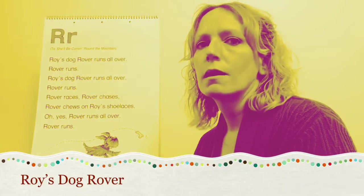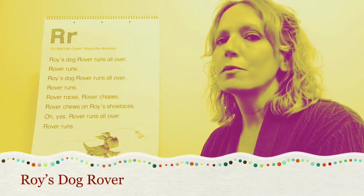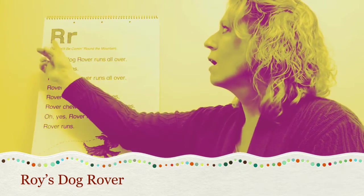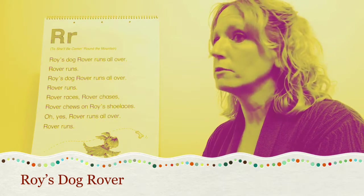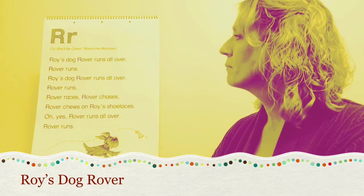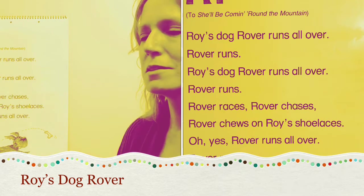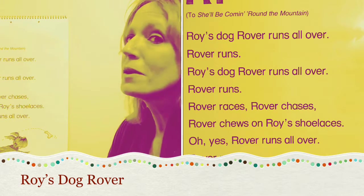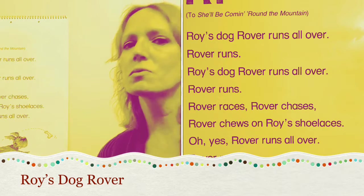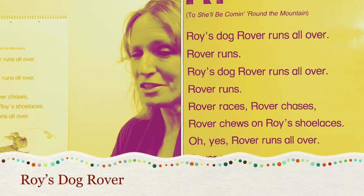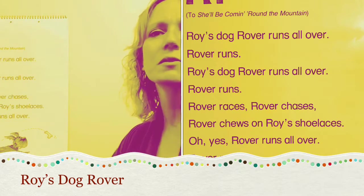Now we're going to sing the R song — this is Austin and Henrik's favorite song. Uppercase R, lowercase R, and this is sung to the tune of She'll Be Coming Around the Mountain. Are you ready? Roy's dog Rover runs all over, Rover runs. Roy's dog Rover runs all over, Rover runs. Rover races, Rover chases, Rover chews on Roy's shoelaces. Oh yes, Rover runs all over, Rover runs.